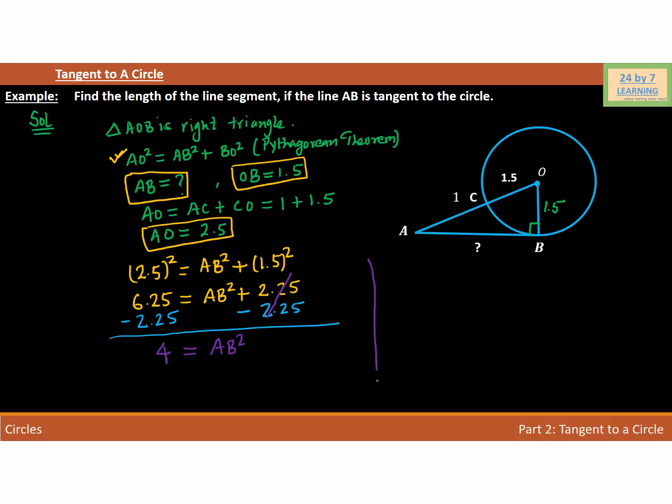So I'm going to write AB² = 4. In order to find the value of AB, I'm going to take the square root on both sides. The square root of AB² is AB and square root of 4 is 2.